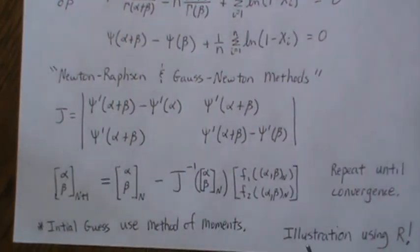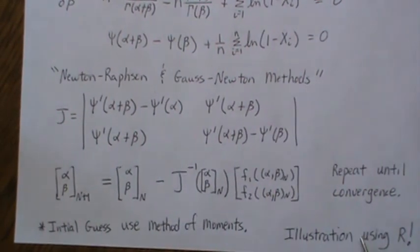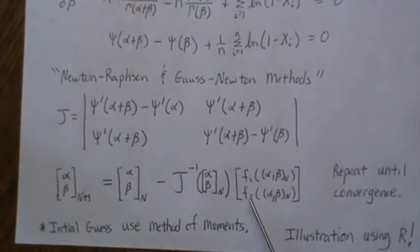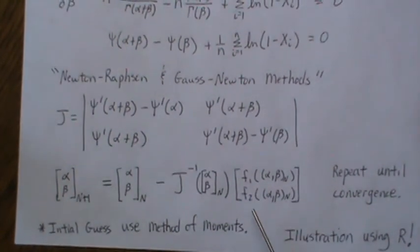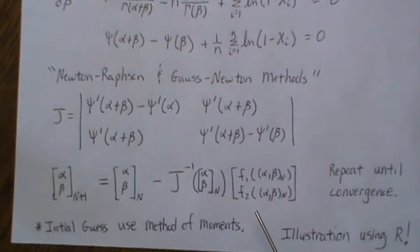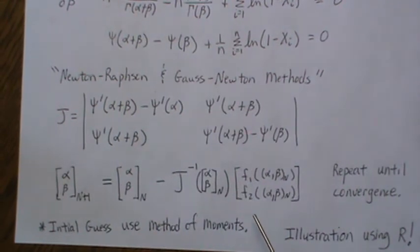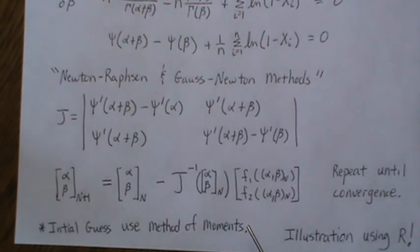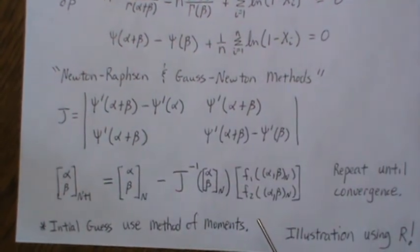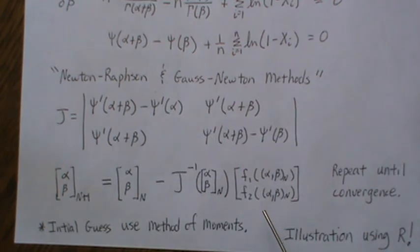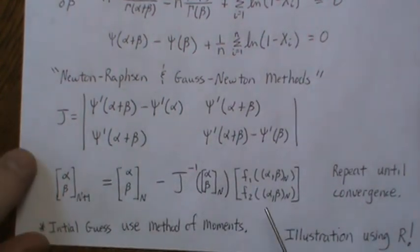We're going to take these equations and copy them into R and run it and see what happens and if it converges. And, of course, to no surprise, it does. And when the larger and larger sample size you use, the closer and closer those maximum likelihood estimates are to the original or true parameters when we conduct our simulation.